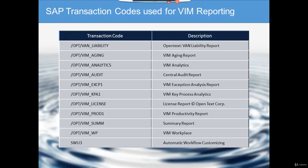VIM Analytics is the most important report in Vendor Invoice Management. You can use this report to do all types of queries: for example, you have a reference number and want to see whether an invoice has been paid, or you have a purchase order number and want to see if there's a pending invoice, or you have a plant and want to see all pending or posted invoices. You can even search by amount. This is the go-to transaction code for every invoice payment history query, and it also covers in-process invoices.